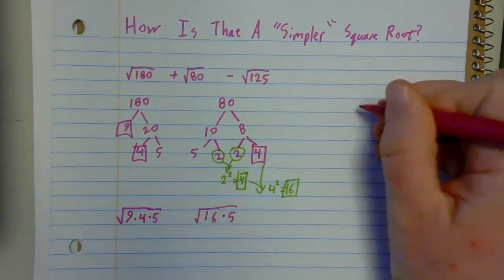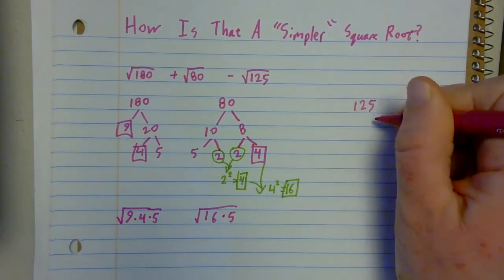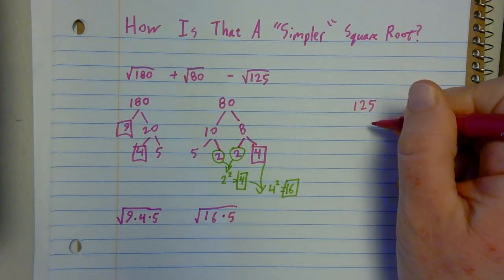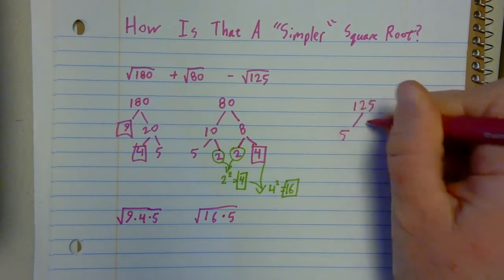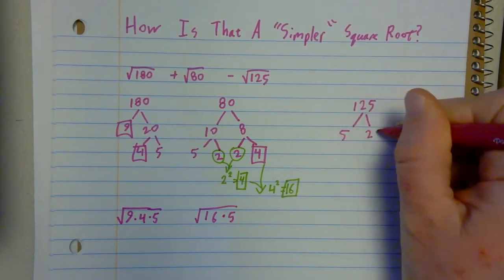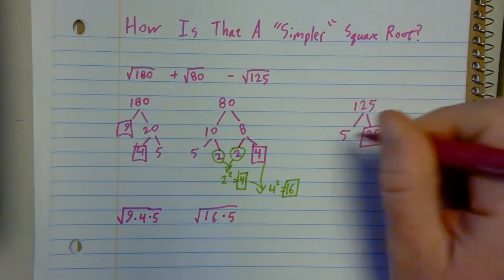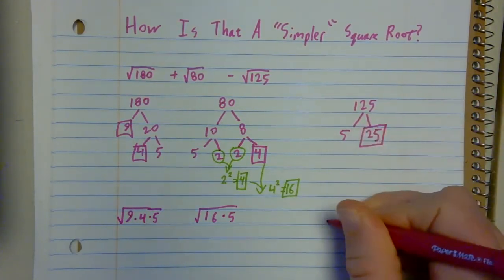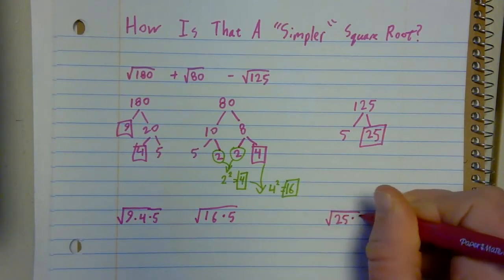So let's look at 125. Well, I see that I can divide a 5 out. So I have 5 times 25. 25 is a perfect square. It's 5 times 5. So this one I can rewrite as 25 times 5.